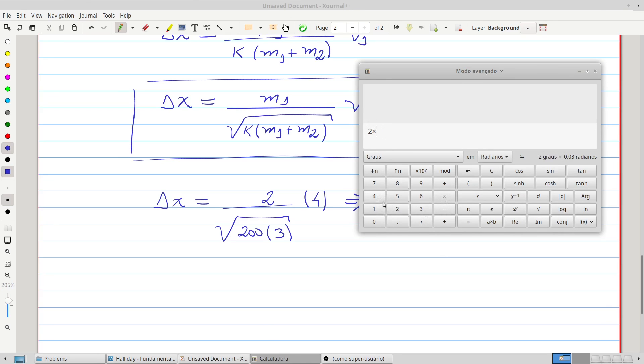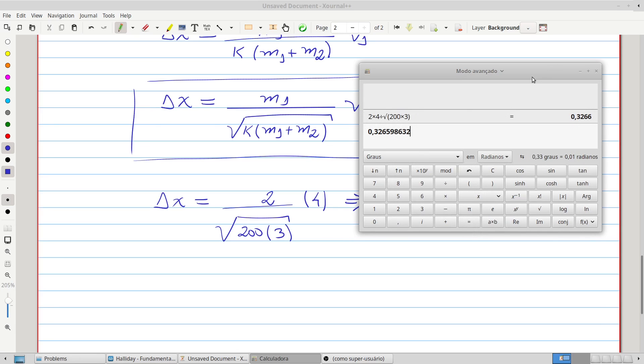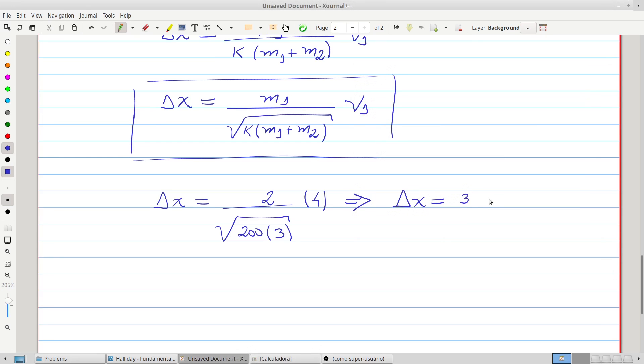2 multiplied by 4 divided by the square root of 200 multiplied by 3, that is 0.33, or 33 centimeters.